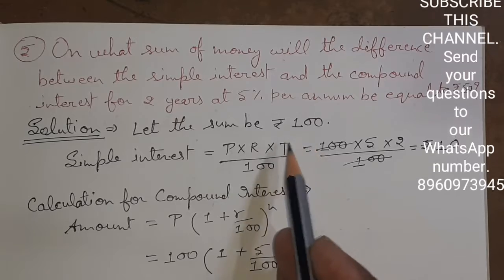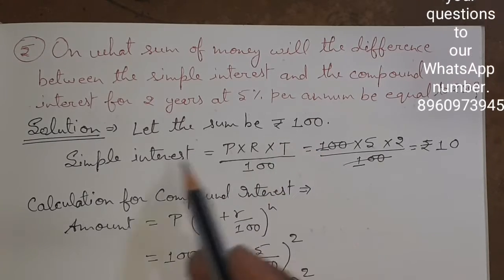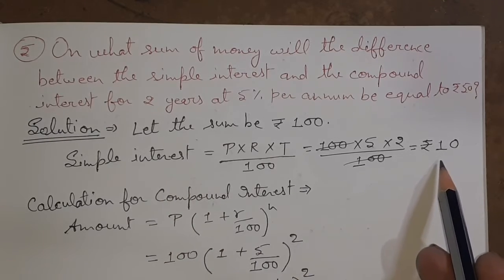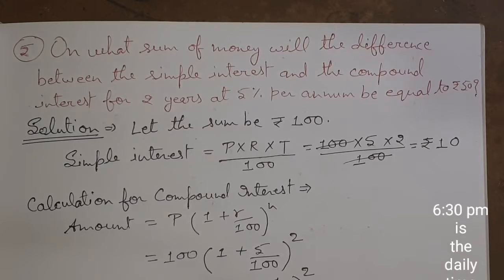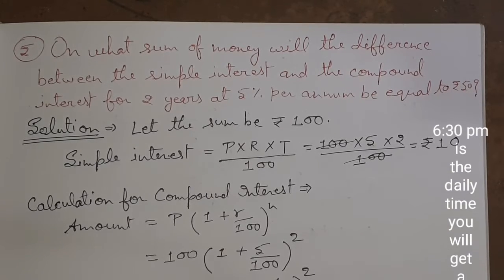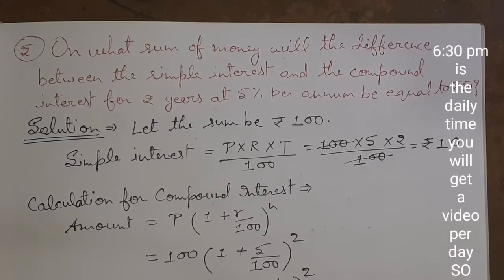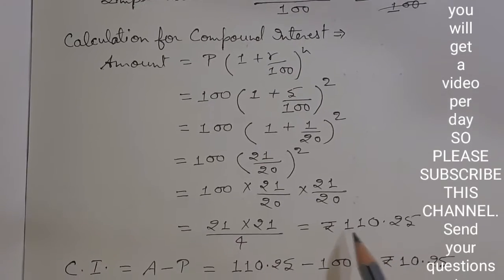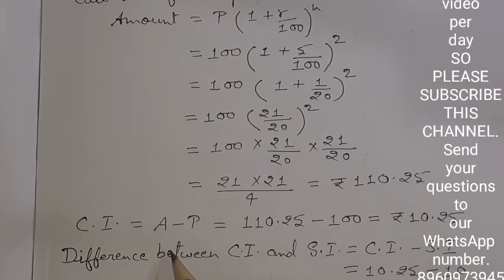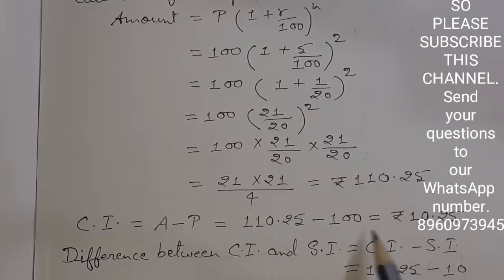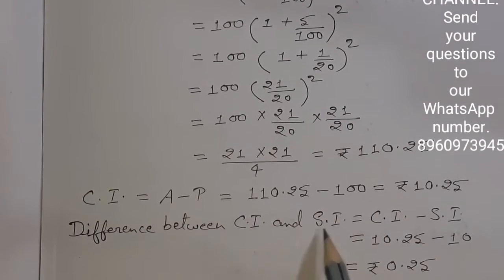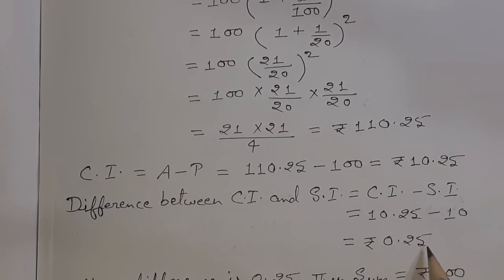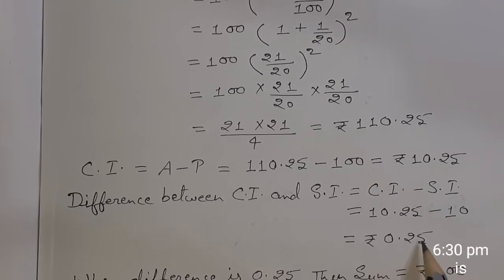We assume principle as 100. Then we will calculate simple interest for two years, which comes to rupees 10. Then we will calculate compound interest, which comes to rupees 10.25.